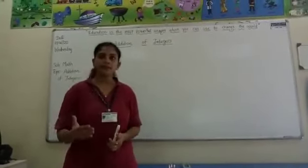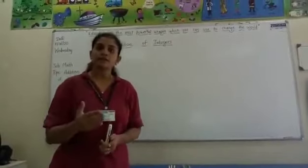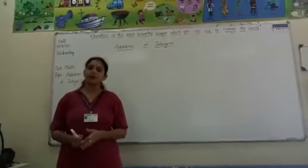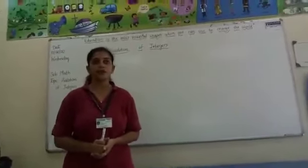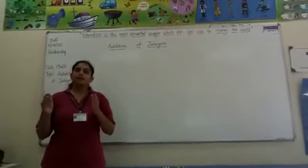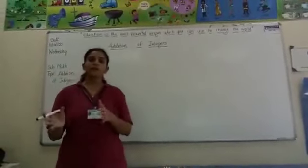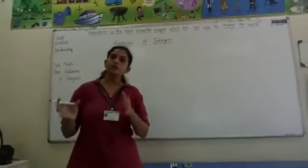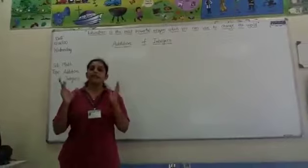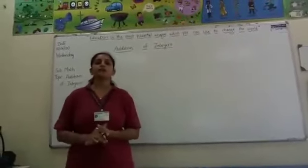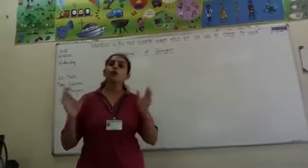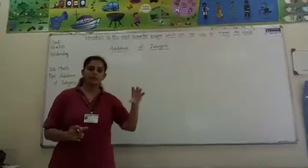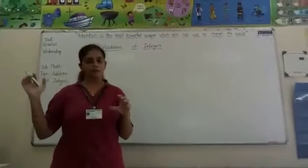The numbers which start from 1, 2 and go on — this set of numbers is called natural numbers. Now you know that before 1, 0 also comes. So when we add 0 to the natural numbers, that set of numbers is called whole numbers. So whole numbers include 0 and natural numbers.